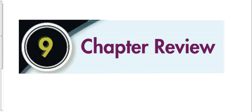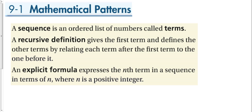This is our Chapter 9 review. So what did we talk about in Chapter 9? We talked about first mathematical patterns. The first thing is a sequence. A sequence is a list of numbers. Each one of these numbers is called a term.